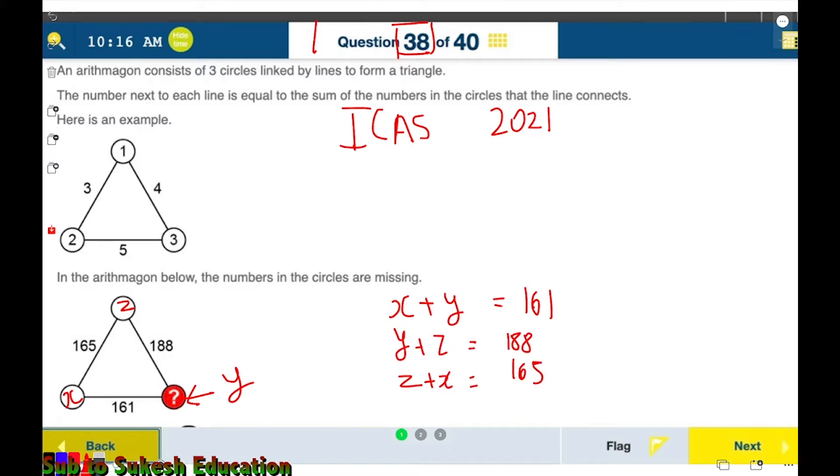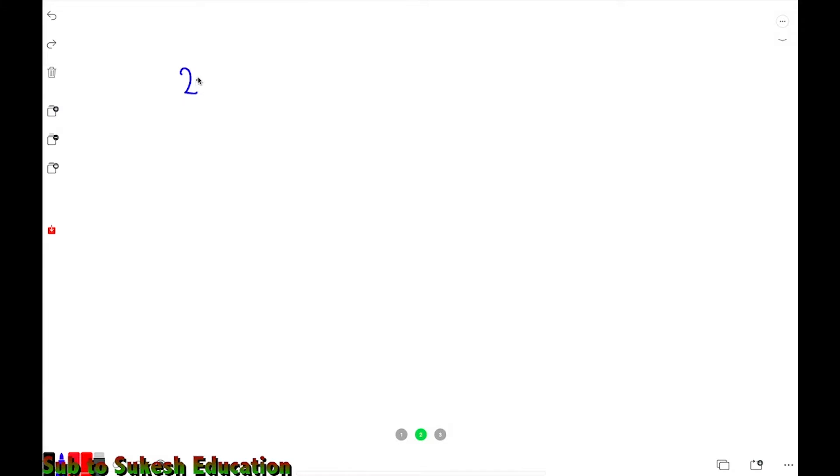So now what do we do with knowing them? If you see all these three equations, we have two x's, two y's, and two z's. To come up with an equation, it's fairly simple at this stage: 2x plus 2y plus 2z equals 188 plus 161 plus 165, which adds up to 514.